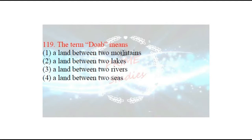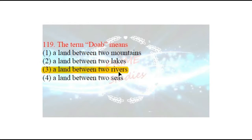Next question: the term 'Doab' means what? Jo Doab akshar hai, uska kya matlab hai? The options are: a land between two mountains, a land between two lakes, a land between two rivers, or a land between two seas. The answer is: a land between two rivers — dho nadiyon ke beech ke kshetr ke liye. For example in India, the Bist Doab is the region between the Beas and Sutlej rivers, and the Bari Doab is the region between the Beas and Ravi rivers.